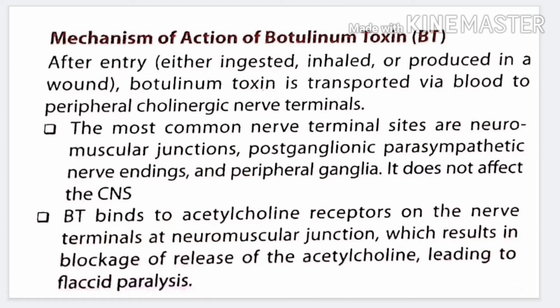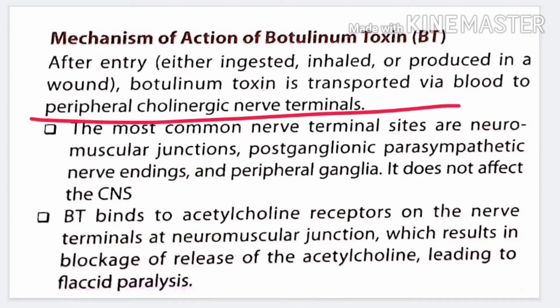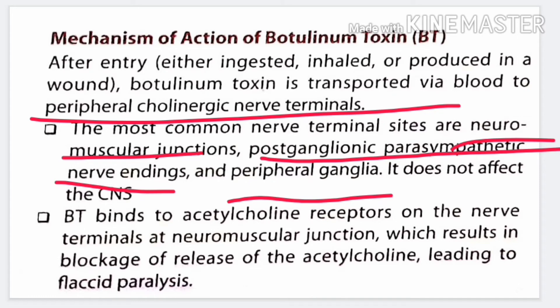Now we will discuss the mechanism of action of botulinum toxin. The bacteria can enter the body through ingestion, inhalation, or through a wound. Once inside, the toxin reaches the blood and travels through the bloodstream to peripheral nerve terminals. The common sites it attacks are neuromuscular junctions and postganglionic parasympathetic nerve endings. Importantly, it does not affect the central nervous system.